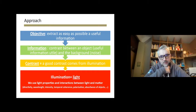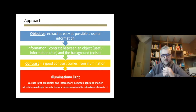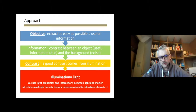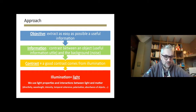The objective is to extract as easily as possible useful information. This information will lie in the image as a contrast between an object — the useful information — and the background noise. A good contrast means a strong difference in gray levels in your image between the object and the background. The contrast can come from illumination, and we use light properties and interaction between light and matter to enhance contrast in the scene so that image processing will be as easy as possible.